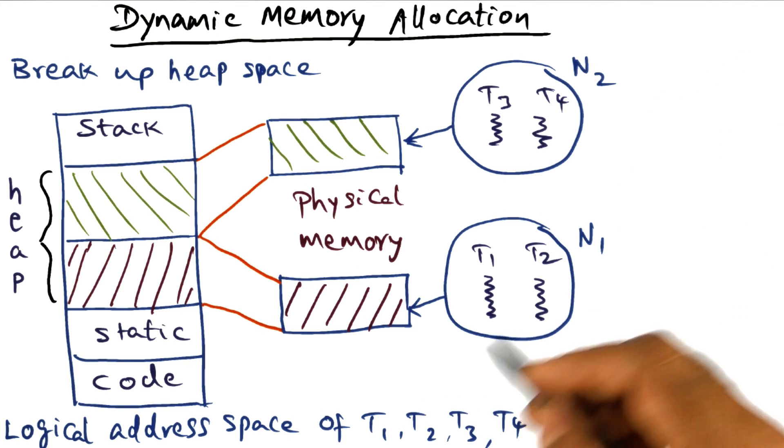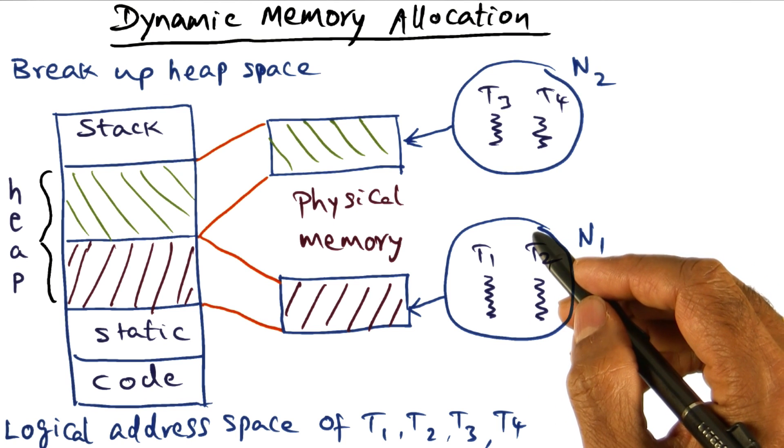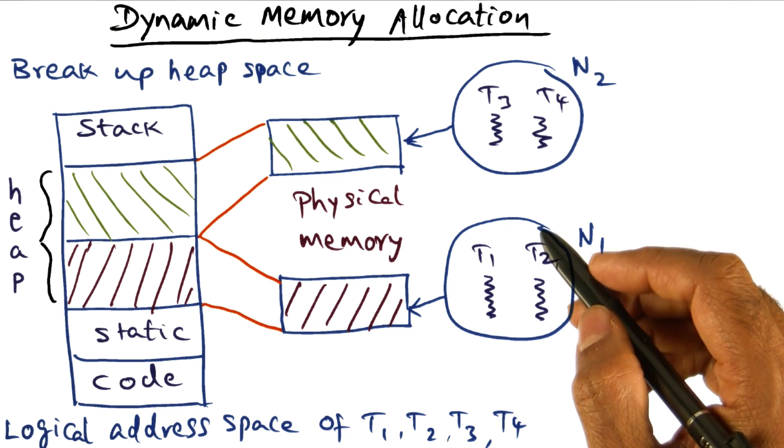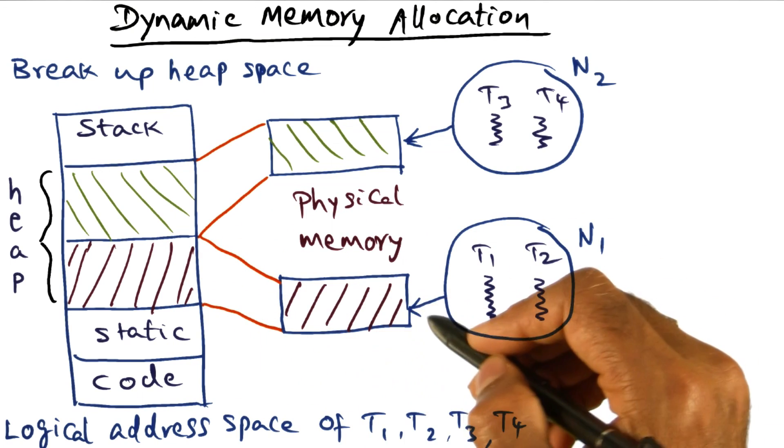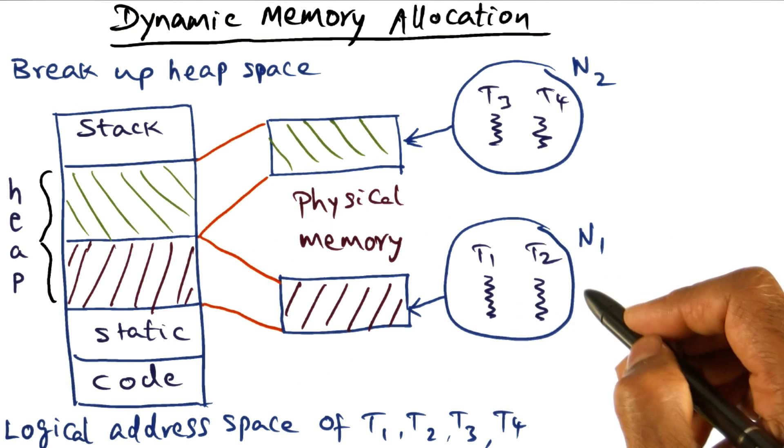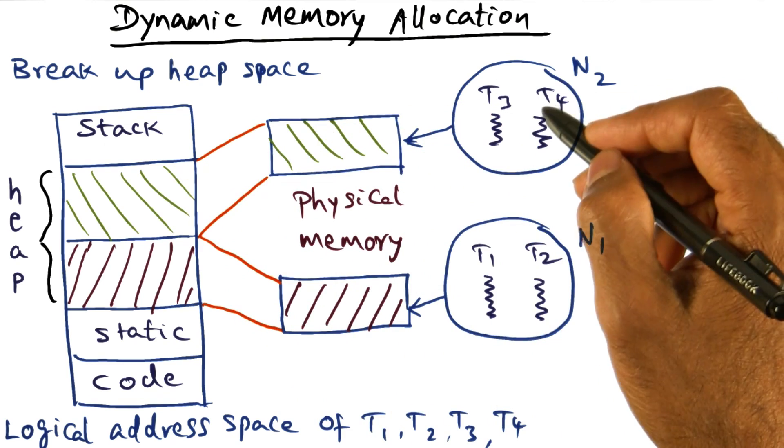Dynamic memory allocation requests, if centralized, will be a huge bottleneck. Instead, we're going to break up the heap and say that this portion of the heap fits in the physical memory that is close to N1. This portion of the heap fits in the physical memory that is close to N2.